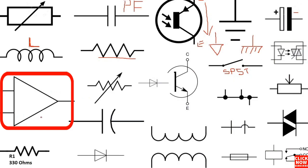Here we have the symbol for the amplifier. Basically, the amplifier usually contains two inputs — a positive input and a negative input — and one output. This is a basic example of the amplifier symbol.